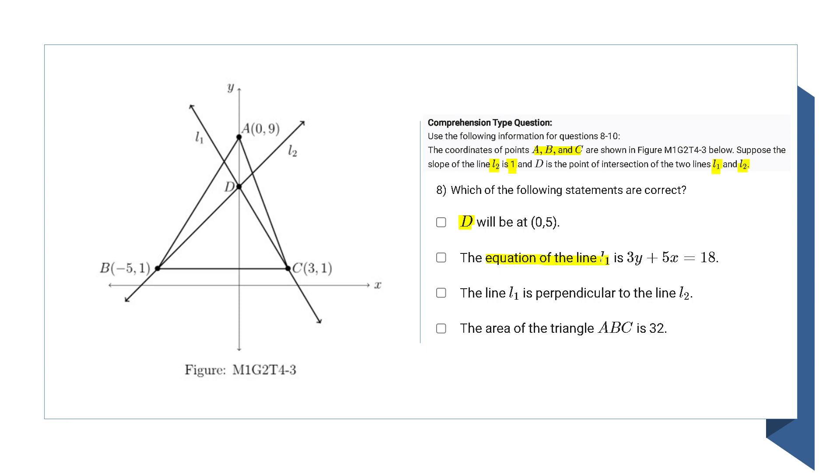I need to find the equation of line L1 and L2, figure out whether they are perpendicular or not, and then find the area of triangle ABC. Let's do each of the options one by one.